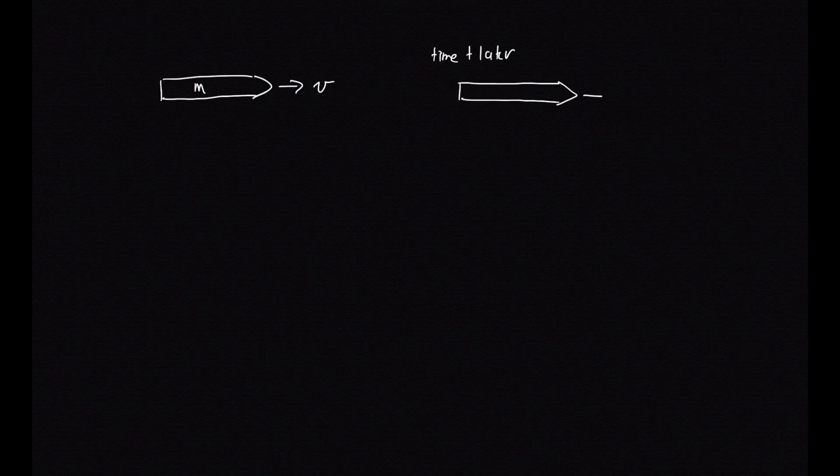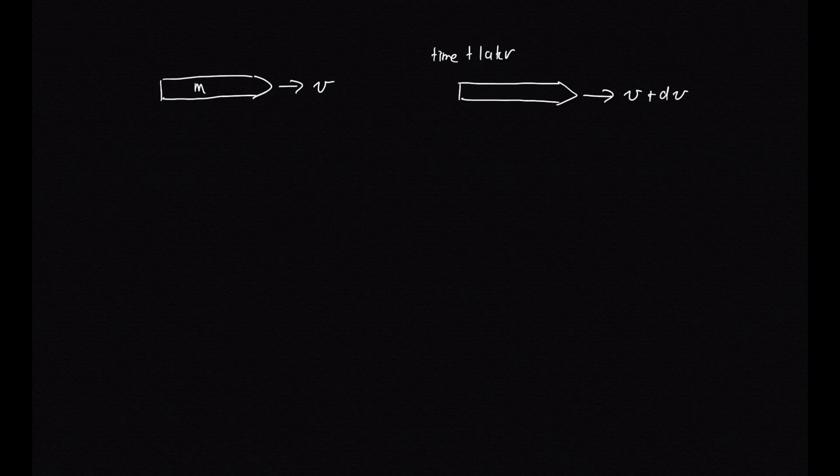Here is our rocket. Again, now it's sped up a little bit. Its speed is now v plus dv. But in order to speed up, it's had to lose some of its mass. So its mass is now m minus dm.